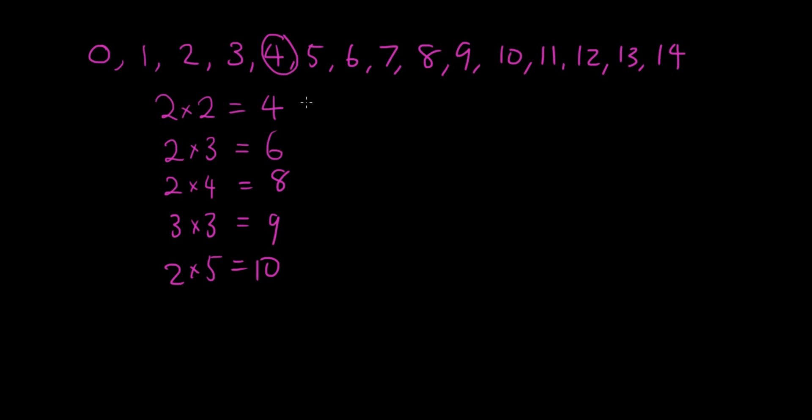So all of these numbers that I can make up using the product of smaller numbers, these numbers are called composite numbers.